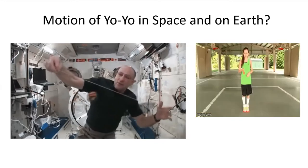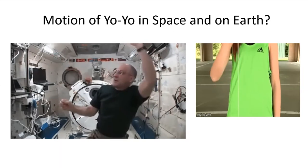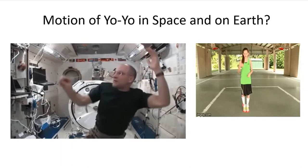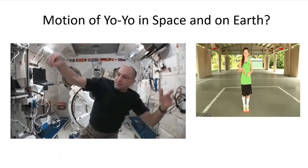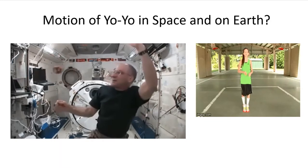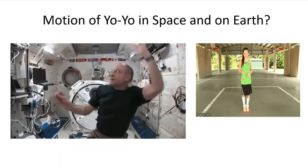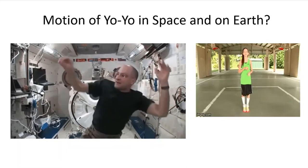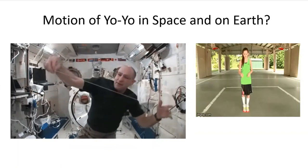Now let's look at a yo-yo. You always have to wind it up, and then when it goes down, does the young lady's hand go up and down or does she just let it go? If you just let it go, it won't come back up. She's trying to keep the motion going so it defies gravity. Now look at an astronaut playing with a yo-yo — yes, astronauts play too. He can defy some gravity as long as it's attached to the string. If it's not attached, it will follow the law of motion and go in a straight line.